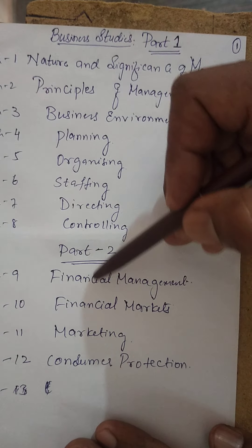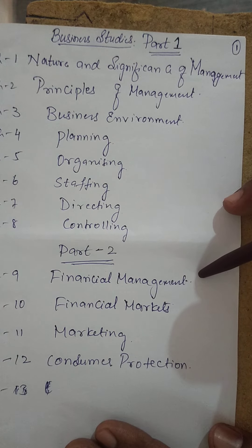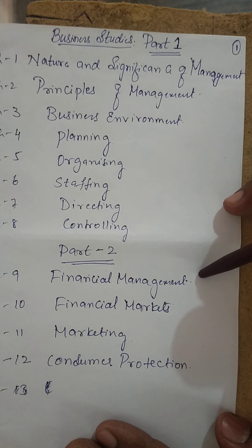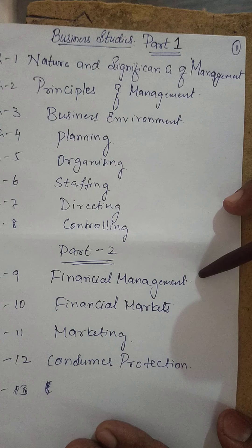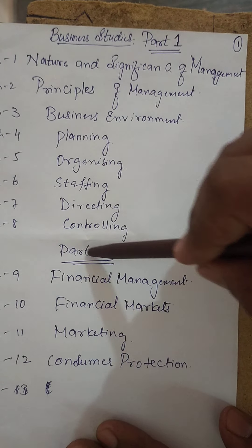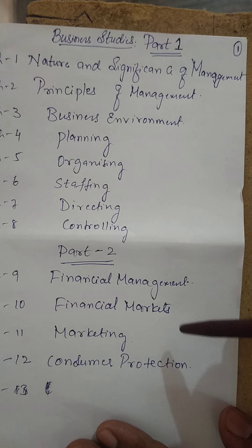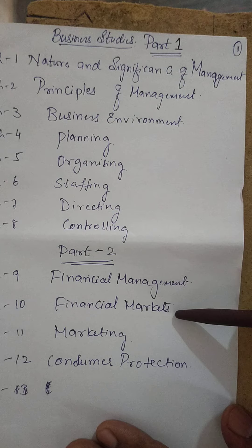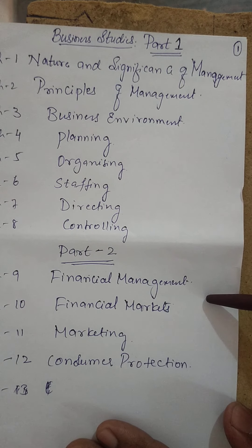Part Two deals with financial management — how money is managed and in what ways. For example, where shares should be invested, in what amount, what proportion of shares should be there, and what dividends should be acquired. These are all discussed in financial management.